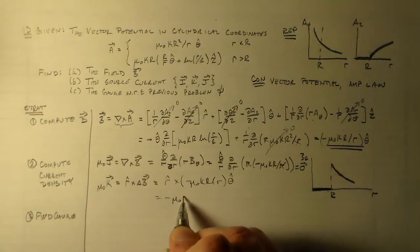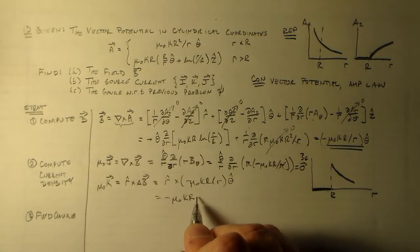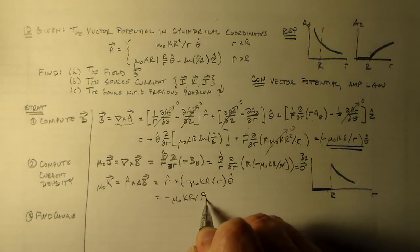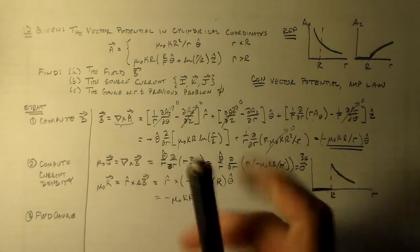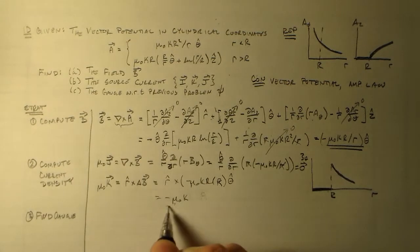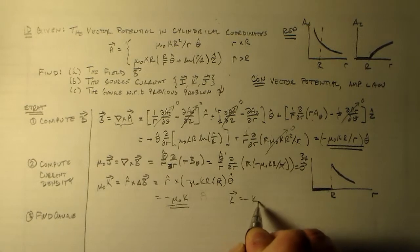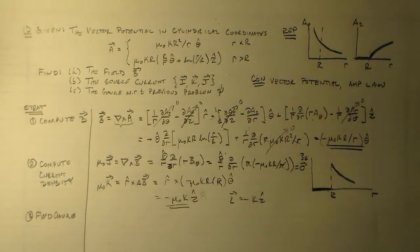Which is minus mu naught k r over r. And this is actually big R because we're evaluating it right here. So this is actually minus mu naught k. And so basically, K equals minus k in the z hat direction. Pretty good.